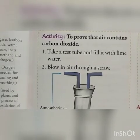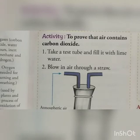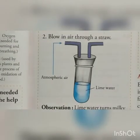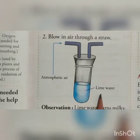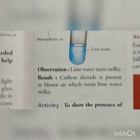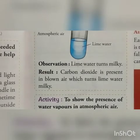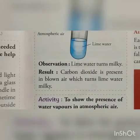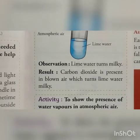Activity to prove that air contains carbon dioxide. Take a test tube and fill it with lime water. Now blow air through a straw into the lime water. You will observe that the lime water turns milky. This shows that carbon dioxide is present in the blown air, which turns the lime water milky. We conclude that carbon dioxide is present in air.